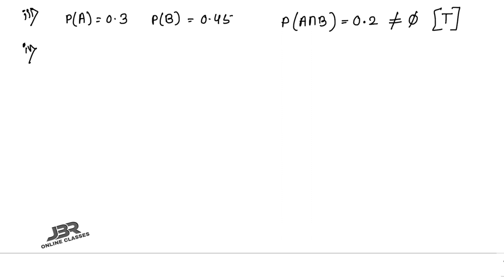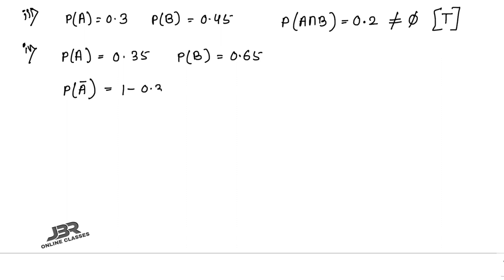Statement four: P(A) = 0.35, P(B) = 0.65, then A and B are complementary events. P(A complement) = 1 − 0.35 = 0.65, which equals P(B). So A and B are complementary events. Answer: True.